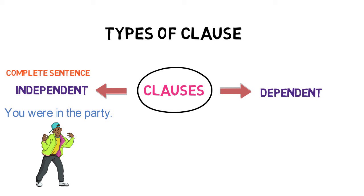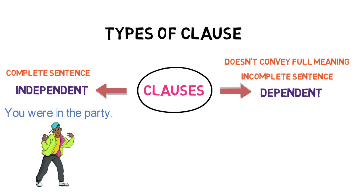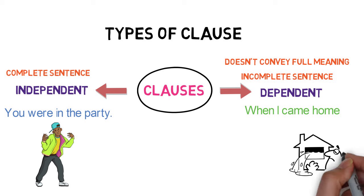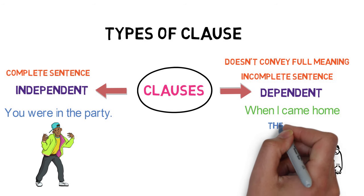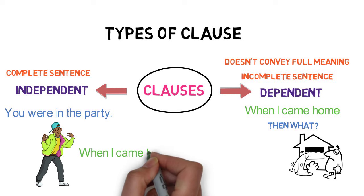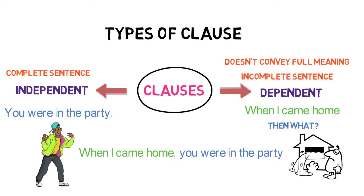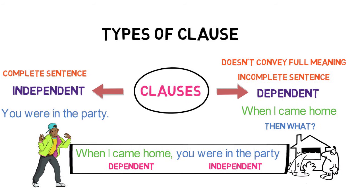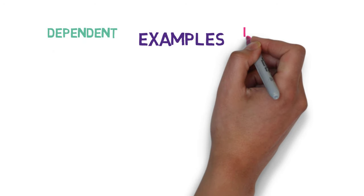Now, what is a dependent clause? It is a group of words with a subject-verb combination, but it doesn't convey full meaning, and hence it is not used as a sentence. For example, 'when I came home' — it has a subject 'I' and a verb 'came,' and it is a meaningful group of words, but it lacks the entire thought: when I came home, then what? So if I say 'when I came home, you were in the party,' that's a complete sentence with one dependent clause and one independent clause — a combination of both to make a meaningful sentence.